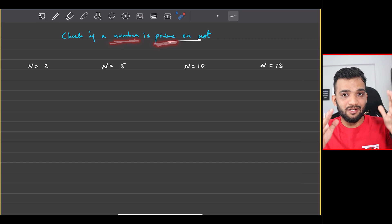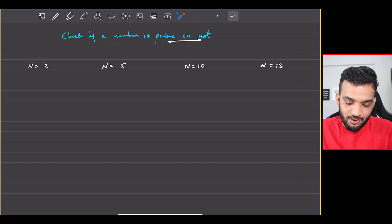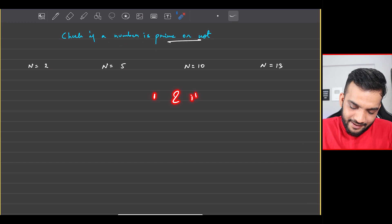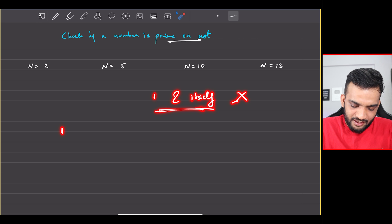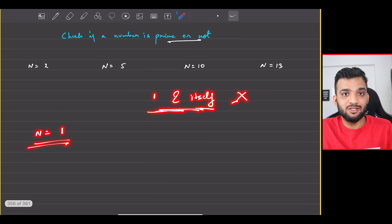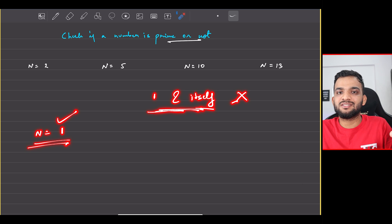You might say a number which is divisible by one and itself. Is it a correct definition? Probably not, because if I take the number n equal to one, this definition will hold - the number is divisible by one and itself, and itself is one. So this would be a prime number, which is not the case.